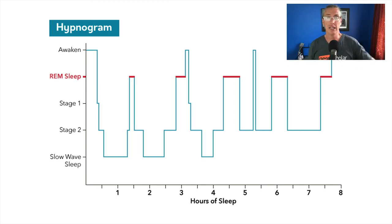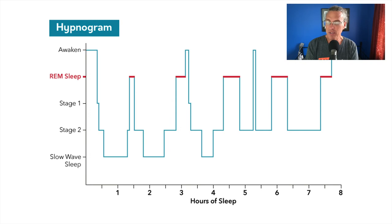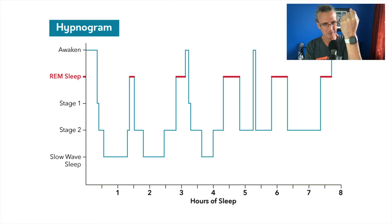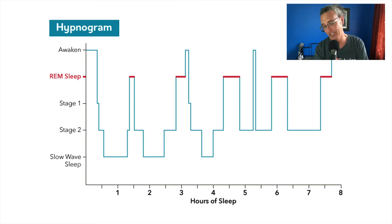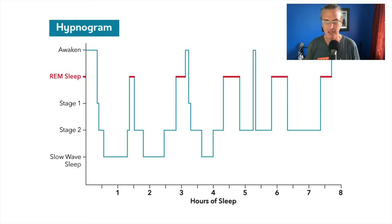Thanks to the EEG system we can see exactly how the brain changes over the course of the night. There are apps now that measure this — I have a Fitbit Sense that I got specifically because I'm doing some research on sleep and wanted to see these cycles, though it isn't working great for me. But the technology does exist.